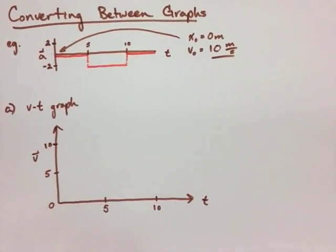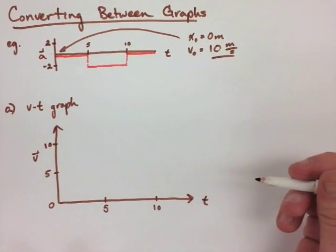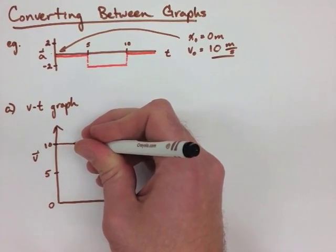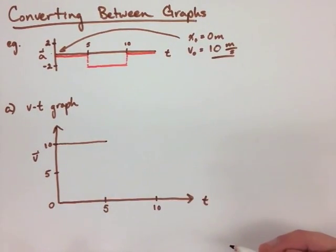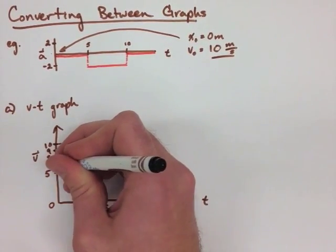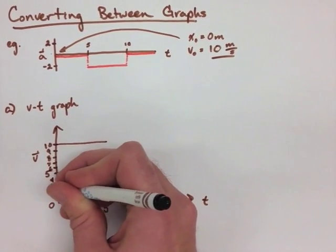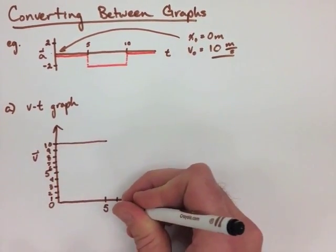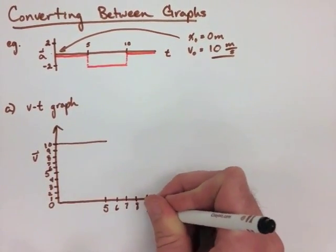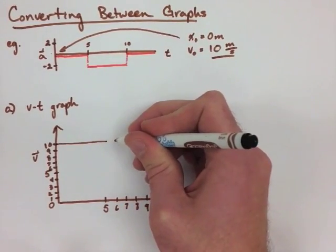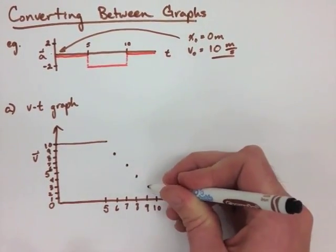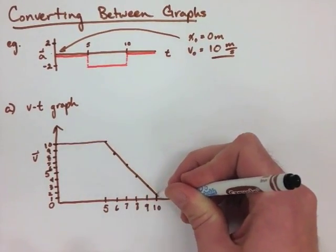So we make our velocity, we make our time, we show the important times, meaning the changes in acceleration. So from zero to five seconds, we have constant velocity of 10 meters per second. Now at five seconds, we start decelerating at two meters per second squared. So each second, we go down two meters per second, as shown with the dots on the diagram.